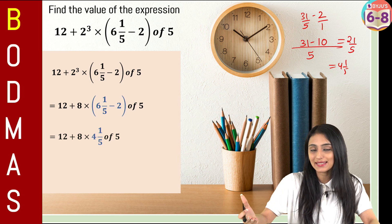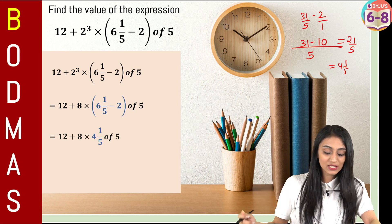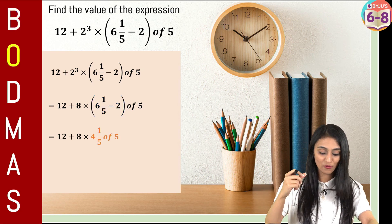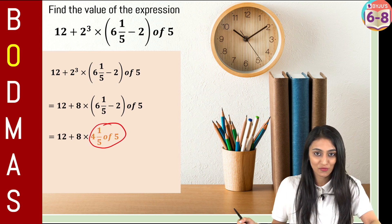Now what is the next step that we have to do here? Next we will be making use of this off because next letter is O over here. So let's simplify this part now. 4 and 1 by 5 off 5.